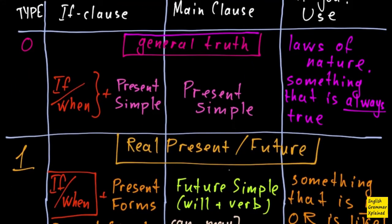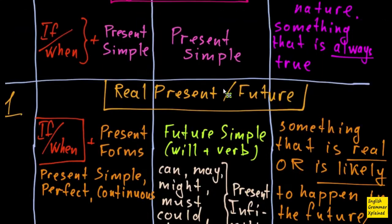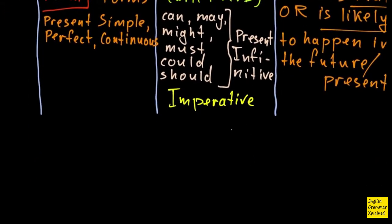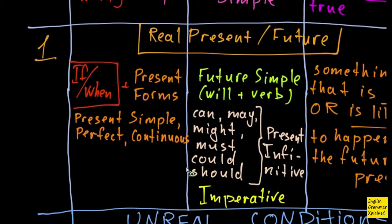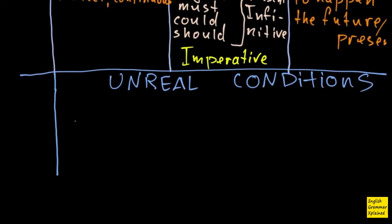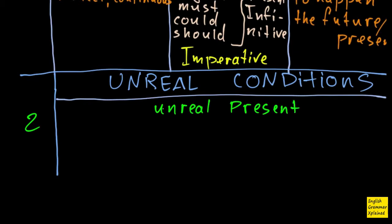And here we will talk about so-called unreal conditions. In part one, I talked about real things, and here we start to enter into the unreal world. Some kind of unreal world. That's unreal conditions. So there are basically two types of unreal conditions, and type, so-called type two, because we have type one and type zero. And of course, we have type two. So how is it formed? What is unreal present?